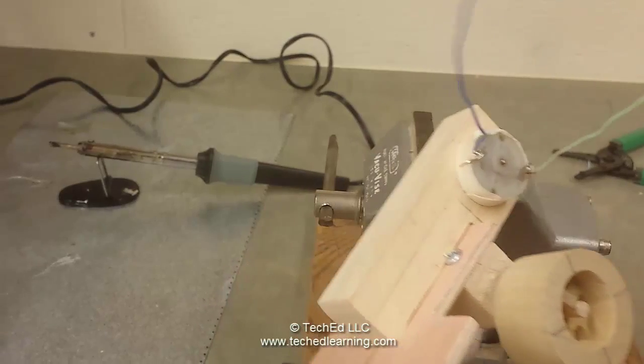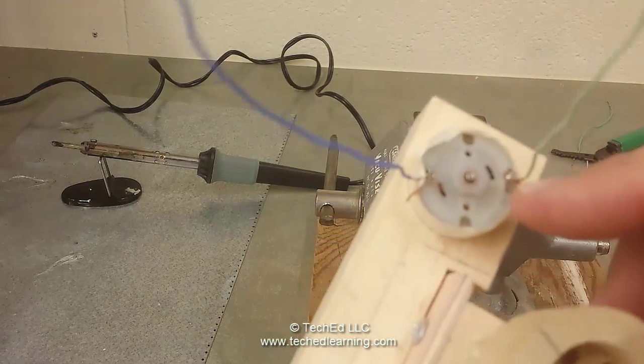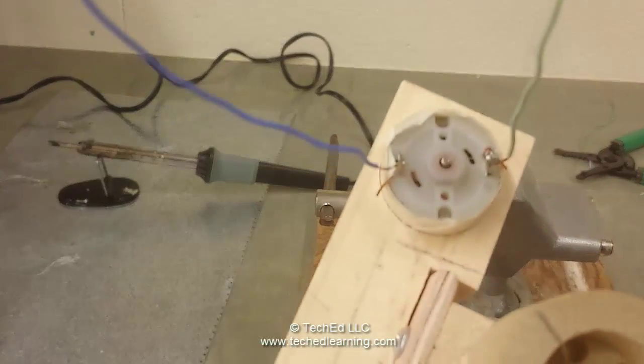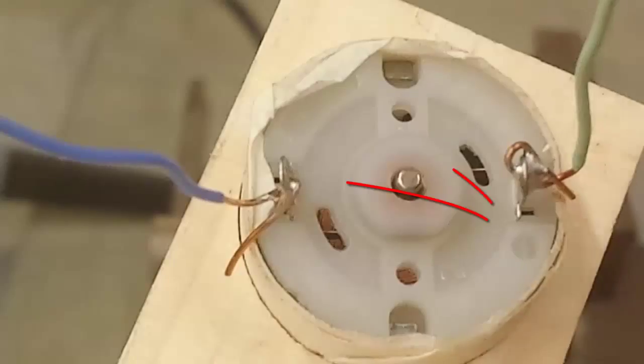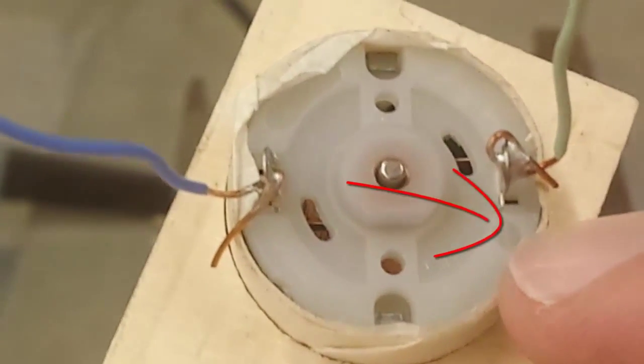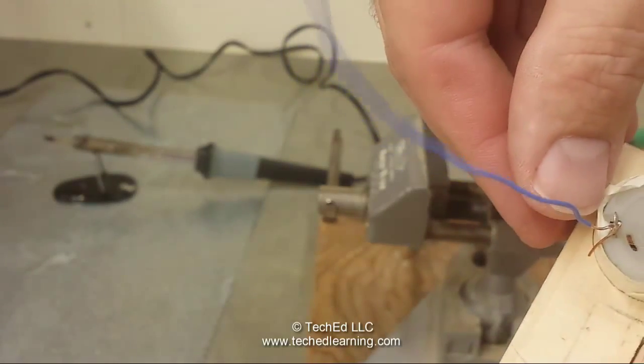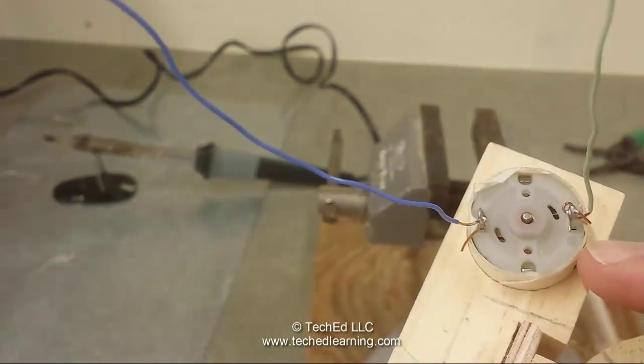In this next step you're going to identify which terminal on the motor is the positive. And if you look carefully right in here you'll see that there is a circle and it's got a plus sign. This should be your positive side. If you come over to this side you'll see there's no marks on there at all. So only the positive is labeled.